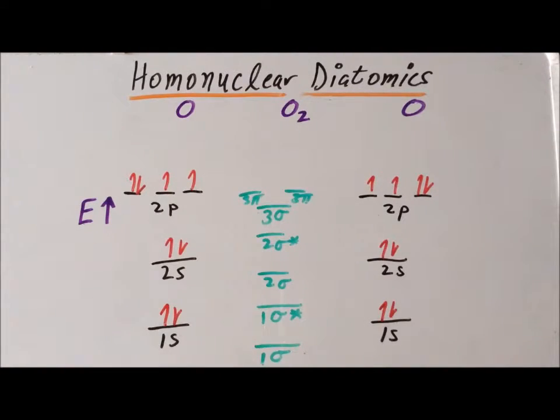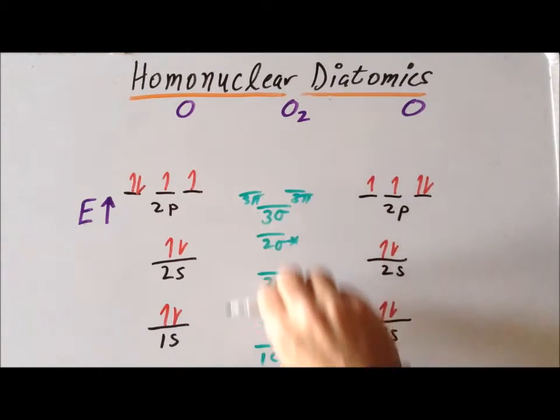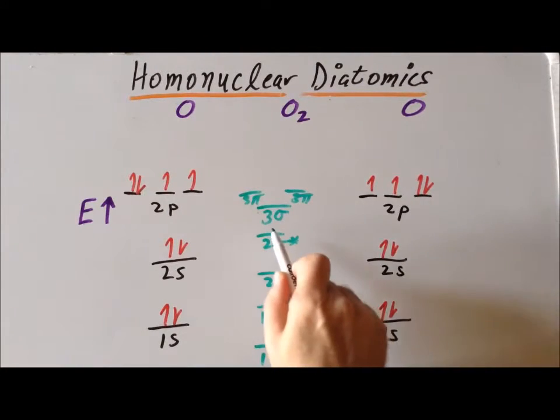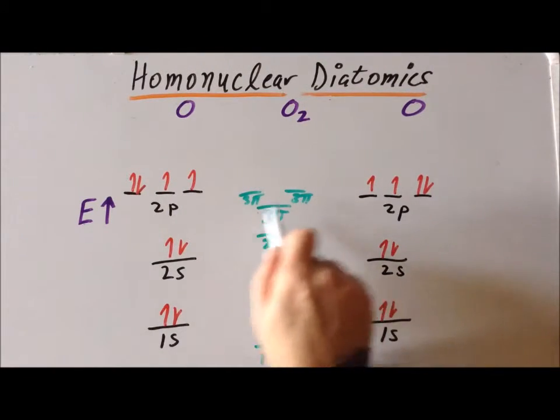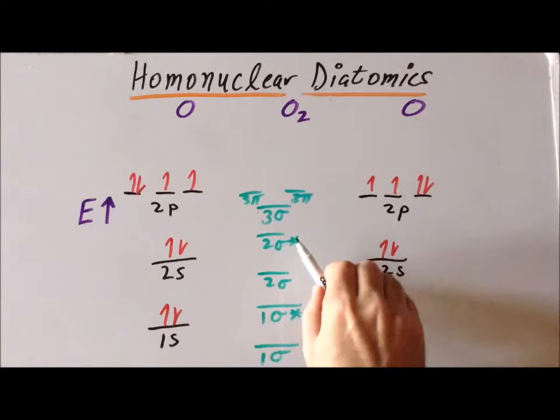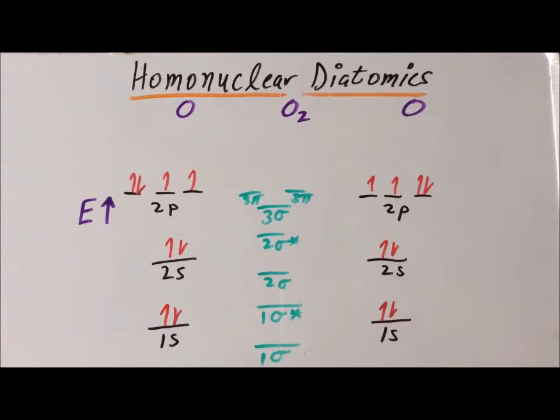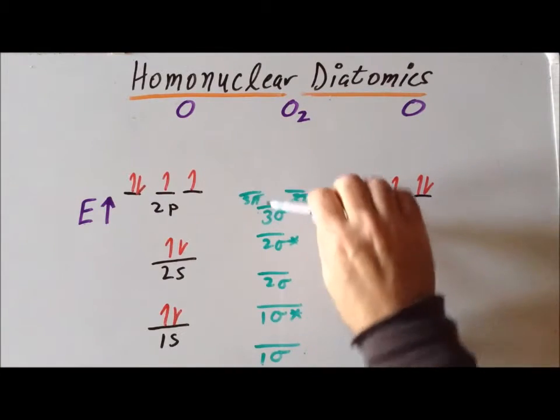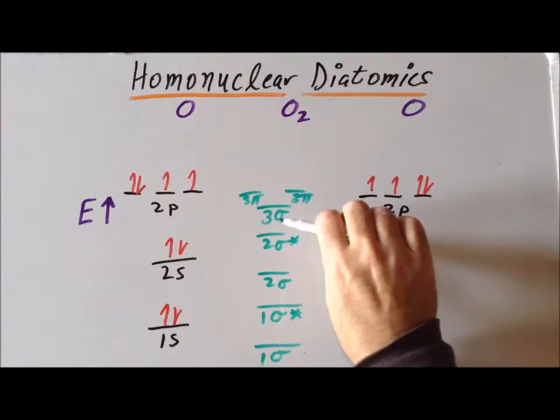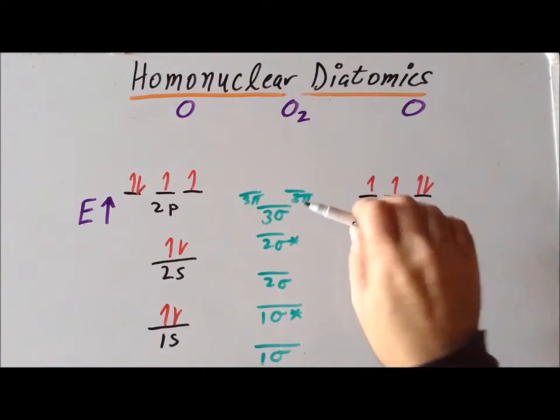The reason for this is that as we increase the nuclear charge, going from left to right across the periodic table, the energies of all the molecular orbitals will drop. But it turns out that the energy of the 3 sigma actually drops faster than do the energies of the 3 pi. And that is why it looks effectively as if the 3 sigma and the 3 pi orbitals have swapped positions.